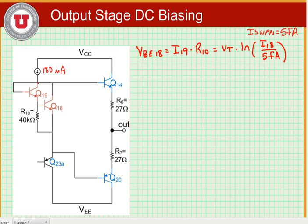Now we also note that the sum of the currents flowing into I19 and I18 has to equal 180 microamps. So we can say I18 plus I19 is equal to 180 microamps. Solving these equations yields I18 is equal to 164 microamps and I19 is equal to 15.7 microamps.